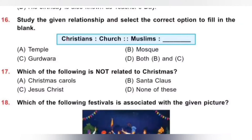Question 16: Study the given relationship and select the correct option to fill in the blank. Christians — Church; Muslims — ___. Options: A. Temple, B. Mosque, C. Gurudwara, D. Both B and C. The place of worship of Christians is Church. The place of worship of Muslims is Mosque. Option B, Mosque, is the correct answer.